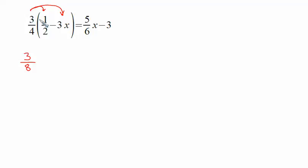Then when we take 3 fourths times 3x, if there is no denominator, the denominator is really just 1. So up in the numerator, 3 times 3x is going to be 9x. In the denominator, 4 times 1 is 4. Don't overlook the negative sign or the subtraction in between. And then that's going to be equal to 5 sixths x minus 3.